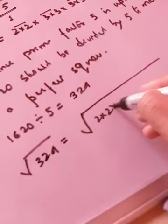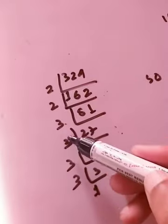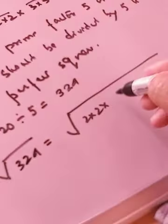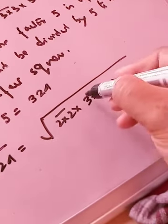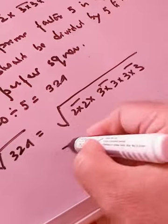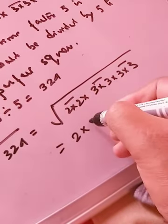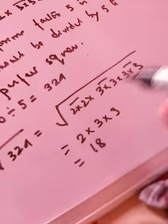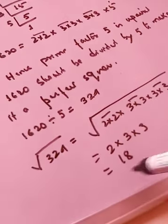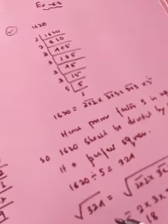So this is the required prime factorization of 324. So we will write it down in this way. How many 2? And how many 3s are there? 1, 2, 3, 4. So just make the pair. So for each pair one digit will come. So it is 18 is the answer. That means 18×18 is 324.